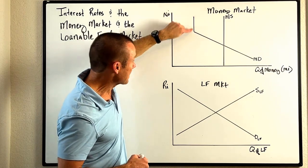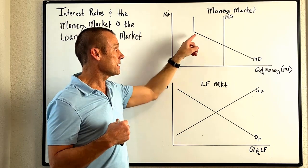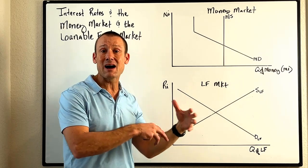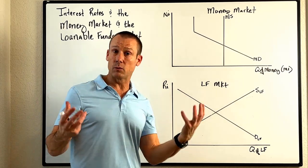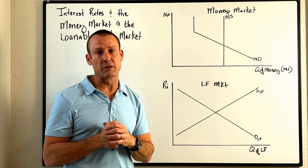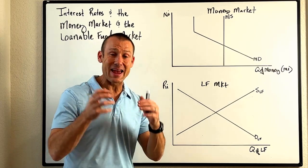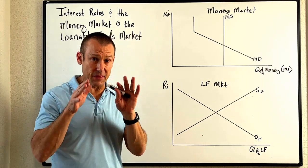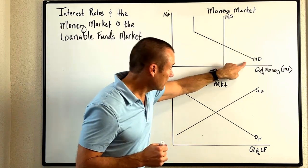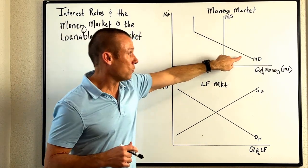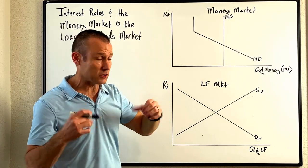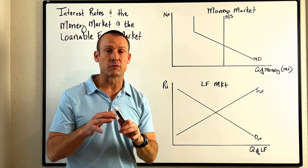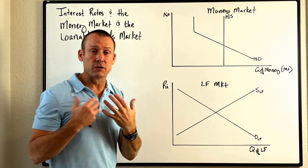There's also a second component: asset demand for money. This is our demand for money above and beyond what we need for basic transactions — for cushion, convenience, and speculative reasons. Asset demand is sensitive to the interest rate: when the interest rate goes up we hold less money, because that rate represents the cost of holding money; when it goes down, we hold more.